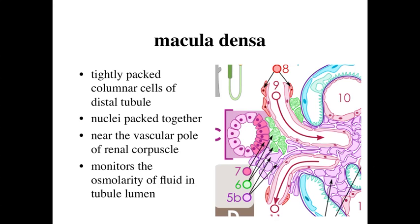The macula densa — those cells at 7, the reddish cells — are tightly packed columnar cells of the distal tubule, located relatively close to the vascular pole of the renal corpuscle. 'Macula densa' refers to the dense or packed accumulation of nuclei in this region. These cells are capable of monitoring the osmolarity of the fluid within the tubule lumen, looking at the concentration of materials flowing through the distal tubule.